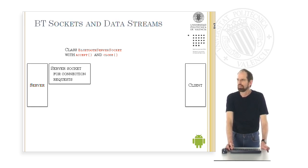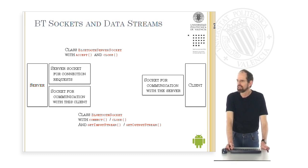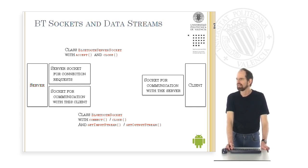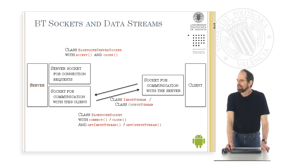Once a connection has been established, based on the BluetoothServerSocket and BluetoothSocket classes, both devices can exchange data. The server creates a server socket and waits for incoming connection requests. The client creates a socket with the BluetoothSocket class and can send a connect message to the server socket using the connect method. The server accepts this connect request by calling the accept method on its BluetoothServerSocket, establishing a second socket on the server side. These two sockets can then be used for communicating data, and both are of class BluetoothSocket. The operations getInputStream and getOutputStream yield the corresponding input and output streams of package Java.io, which can then be used to communicate data in both directions.